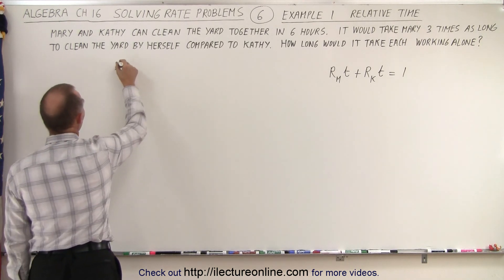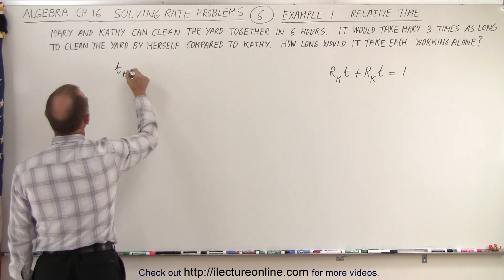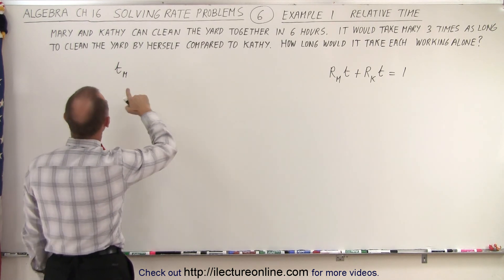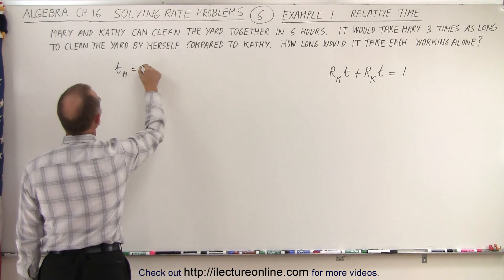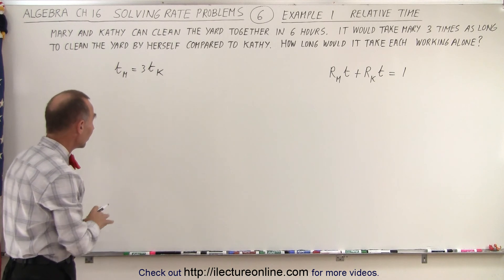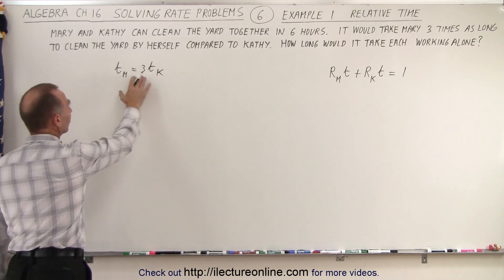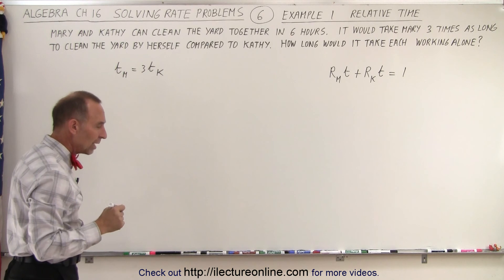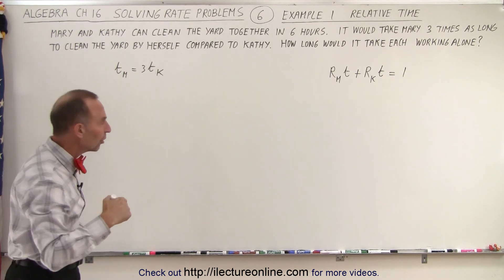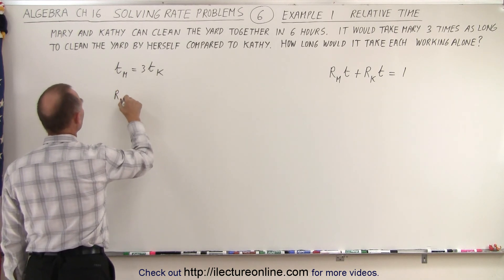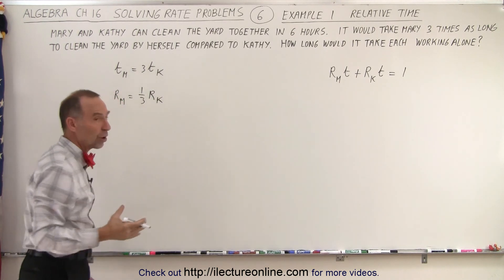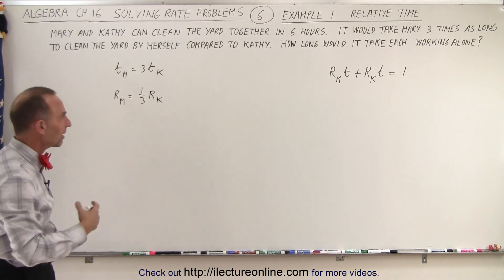Notice that the time for Mary is going to be equal to three times the time of Kathy if they were to work the yard by themselves — Mary would take three times as long as Kathy to do the job. So if Mary takes three times as long, then her rate is one-third as high. We can say that the rate of Mary is equal to one-third the rate of Kathy, because the rate is the inverse of the time spent.